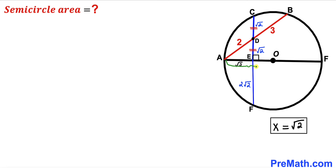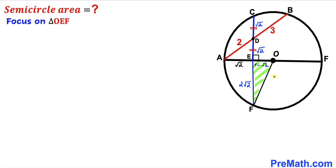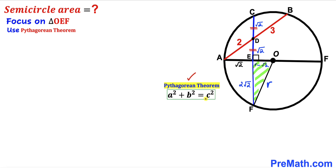Now let's label segment AO as our radius R. Then segment OE is going to be R minus the square root of 2. I have connected center O with point F, giving us right triangle OEF. In this triangle, OF is the radius of the circle, labeled R, and the two legs are OE (which is R minus square root of 2) and EF (which is 2 times square root of 2).